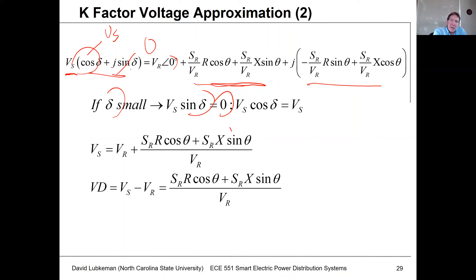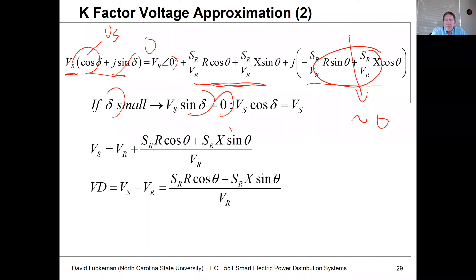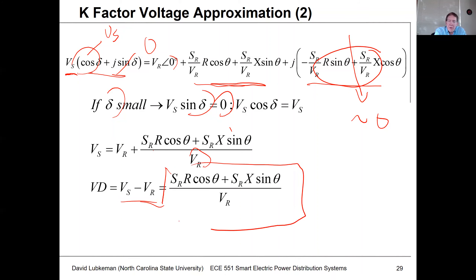If the imaginary part on the left-hand side is zero, the corresponding term is essentially zero as well. The line voltage drop is going to be the receiving end KVA load times the total line resistance times cosine theta (the power factor), plus Sr times X times sine theta, all divided by Vs or Vr. The voltage drop, putting Vs and Vr together, is Vs minus Vr, given by this expression — still nonlinear because we have voltage in the denominator.